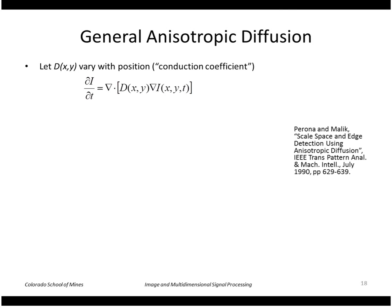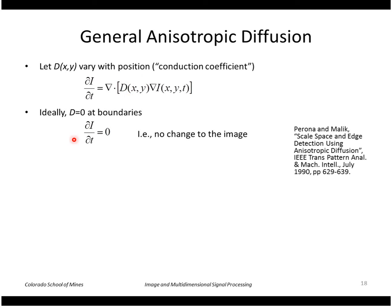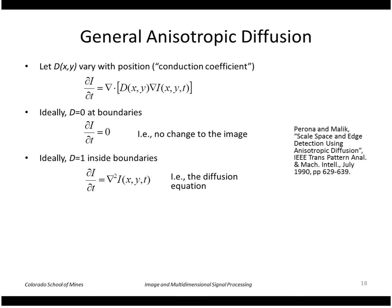We can write the diffusion equation in this form where d is a function called the conduction coefficient. We take the gradient of the image and then the gradient of that final result. At boundaries, we want d to equal zero — meaning no change to the image, so dI/dt equals zero. Away from boundaries, we want d to be one, which reduces the equation to the normal diffusion equation.